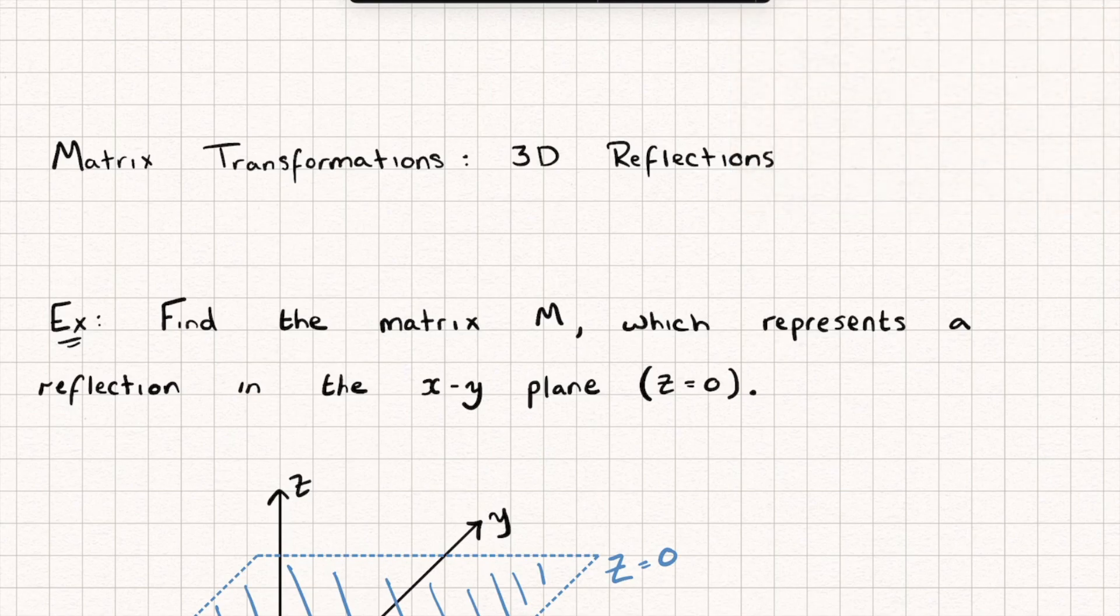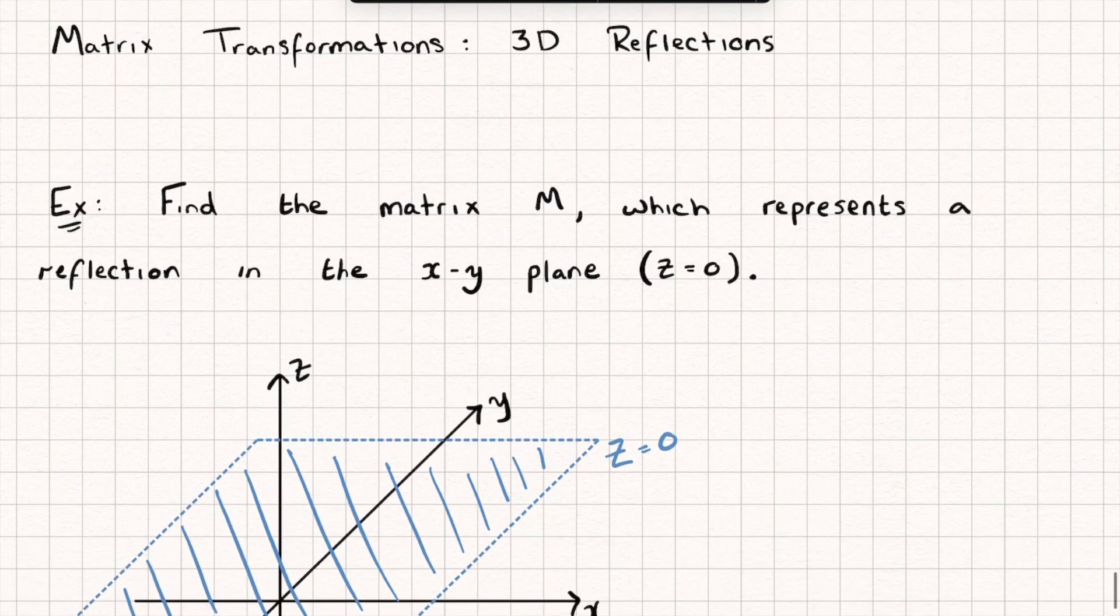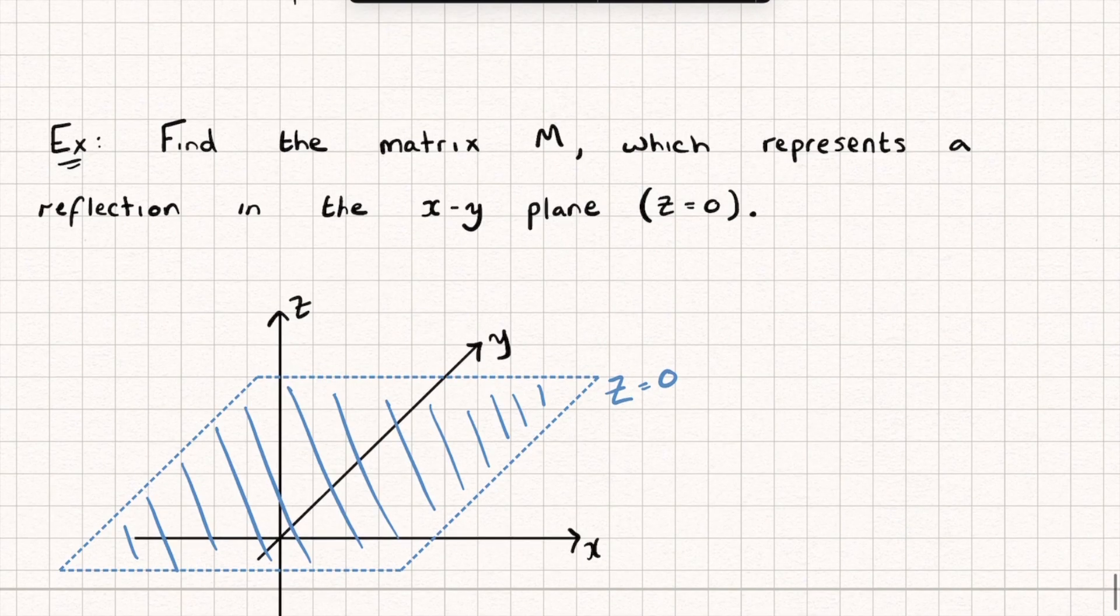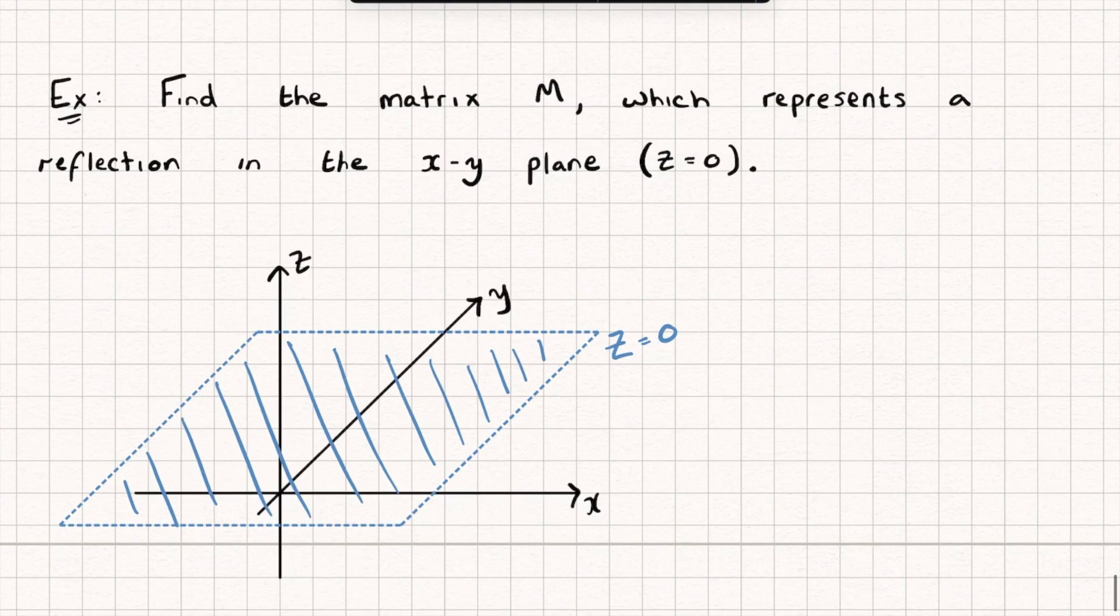To look at this we're going to look at three different examples for the three different planes that we're going to be interested in reflecting in. Let's start off with this one where we have to find the matrix M which represents a reflection in the XY plane, the plane with the equation Z equals zero. You can see I've sketched it on here.